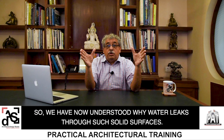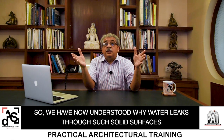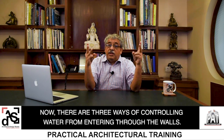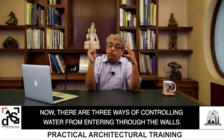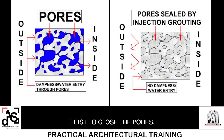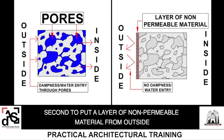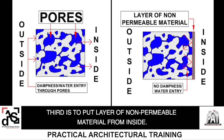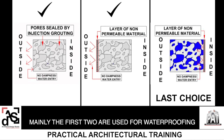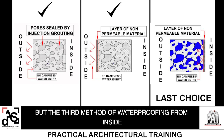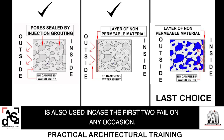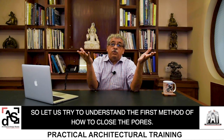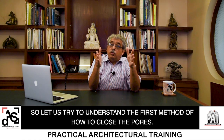So we have now understood why water leaks through such solid surfaces. There are three ways of controlling water from entering through the walls. First, to close the pores. Second, to put a layer of non-permeable material from the outside. Third, to put a layer of non-permeable material from inside. Mainly the first two are used for waterproofing, but the third method — waterproofing from inside — is also used in case the first two fail. Let us try to understand the first method of how to close the pores.